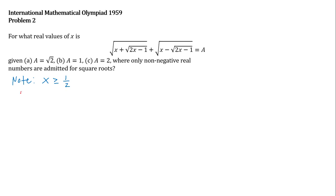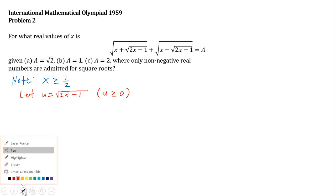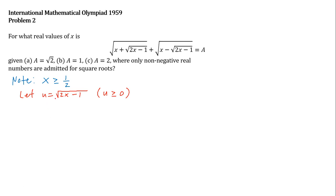Let u be equal to the square root of 2x minus 1. Because we are changing the variable, we must also determine the range of values for u. Since x is greater than or equal to one-half, u must be greater than or equal to zero. Squaring both sides gives u squared equals 2x minus 1, and solving for x we obtain x equals u squared plus 1, all divided by 2.